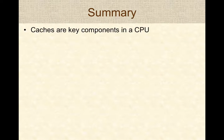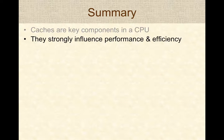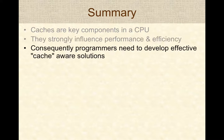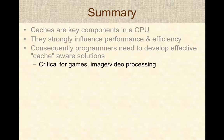In summary, caches are key integral components of the CPU — a considerable portion of the CPU die is dedicated to caching. They strongly influence the performance and efficiency of programs. As programmers, you need to develop cache-aware solutions and write cache-aware implementations for algorithms. This is very critical for games and image or video processing where you want to deliver frames at a given rate.